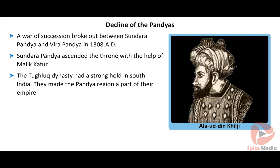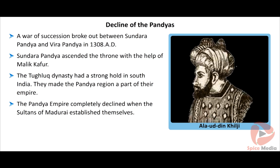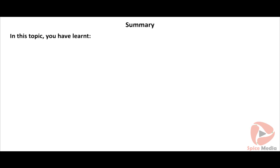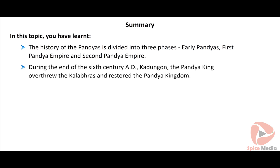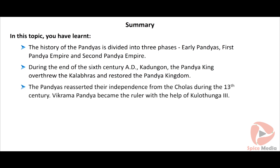A war of succession broke out between the sons of Maravarman Kulasekra I after his death in 1308 AD — between Sundrapandyan and Veerapandyan. Sundrapandyan was able to ascend the throne with the help of Malik Kafar, the commander of Alauddin Kilji. The Kilji dynasty was succeeded by the Tughlaq dynasty, which had a strong hold in South India and made the Pandya region a part of their empire. The Sultans of Madurai established themselves after the decline of the Tughlaqs, and the Pandya empire completely declined after this.